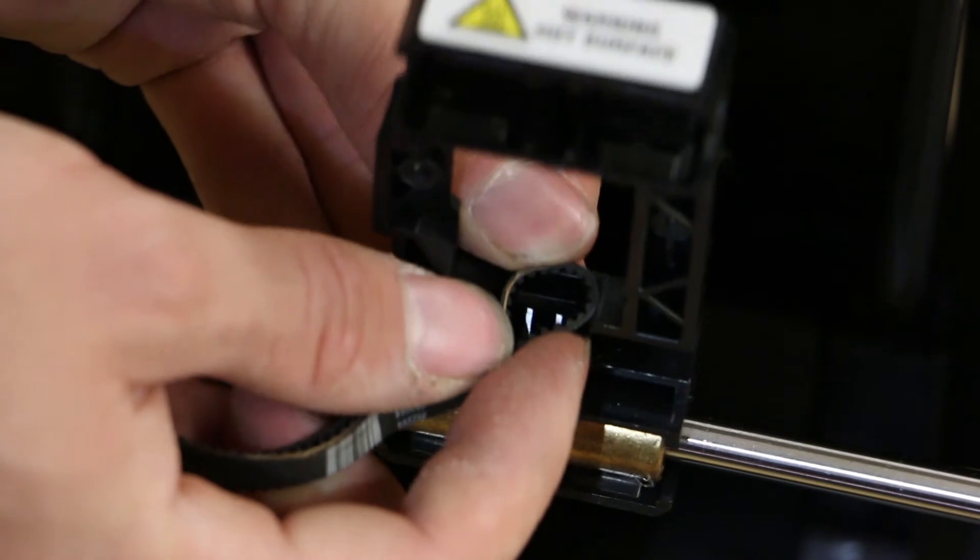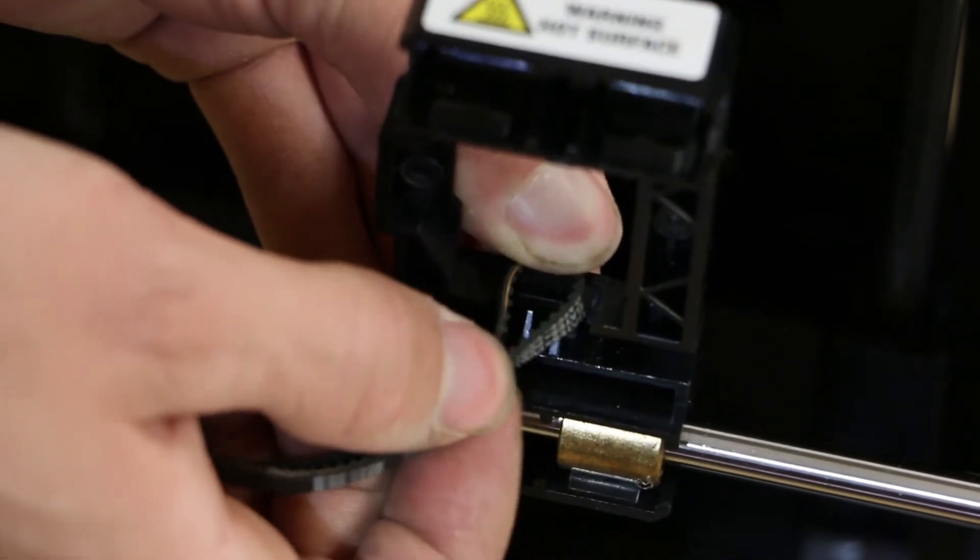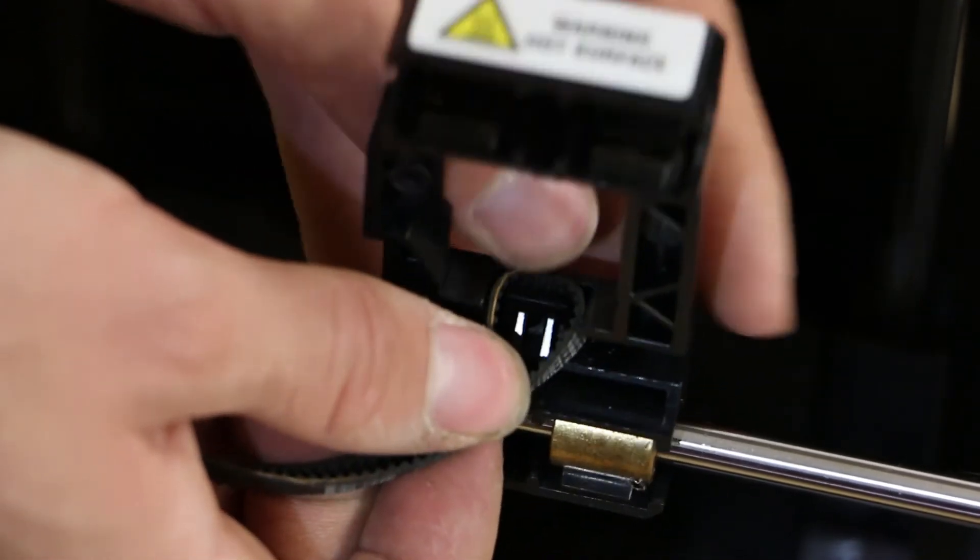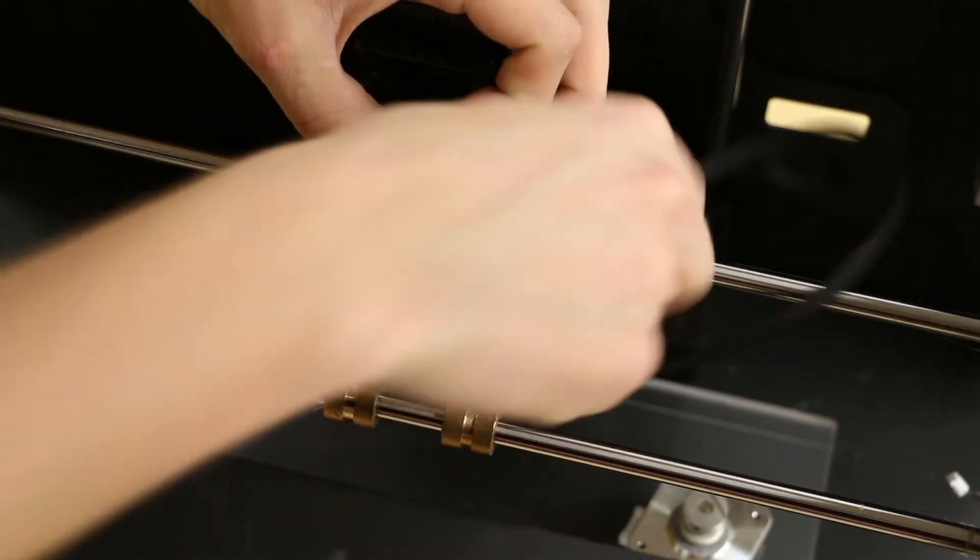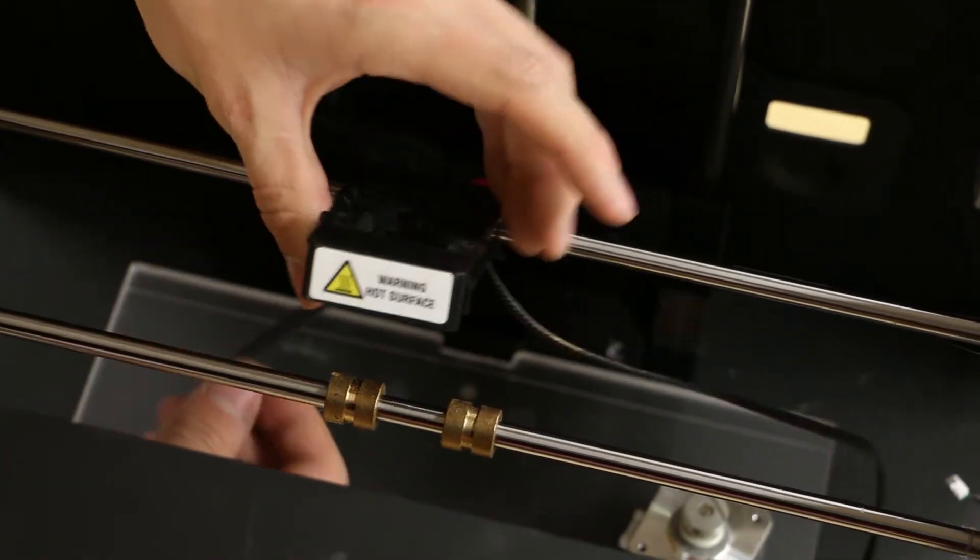To reseat the new belt, fold the belt as shown, then slide it into position. Push the loose belt through the X-axis rails into the build volume of the printer.